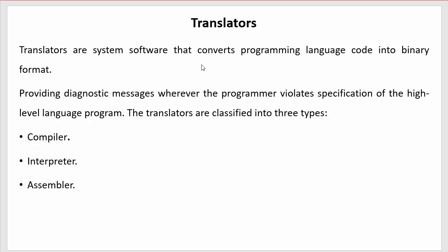The first point is: translators are system software that converts programming language code into binary format. As we have seen in previous videos, a computer can understand only the language of binary format, which is in the form of zeros and ones. But we cannot write instructions in binary language, so we write instructions in high-level or mid-level language. There has to be a translator which translates those instructions into a language understandable by the computer. The next point is providing diagnostic messages wherever the programmer violates the specification of the high-level program.